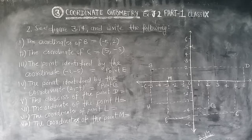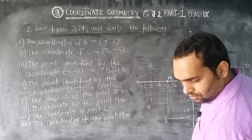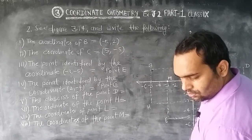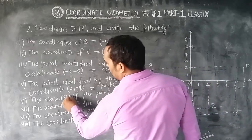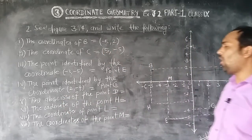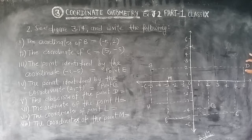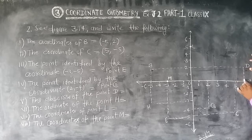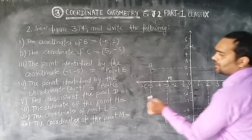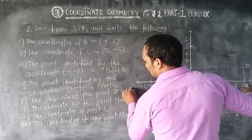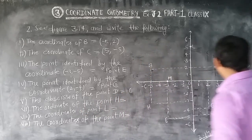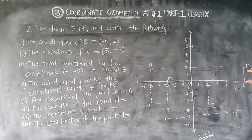Fifth: the abscissa of point D. Abscissa means the x-coordinate. The line from point D touches the x-axis at 6, so the abscissa of point D is 6.